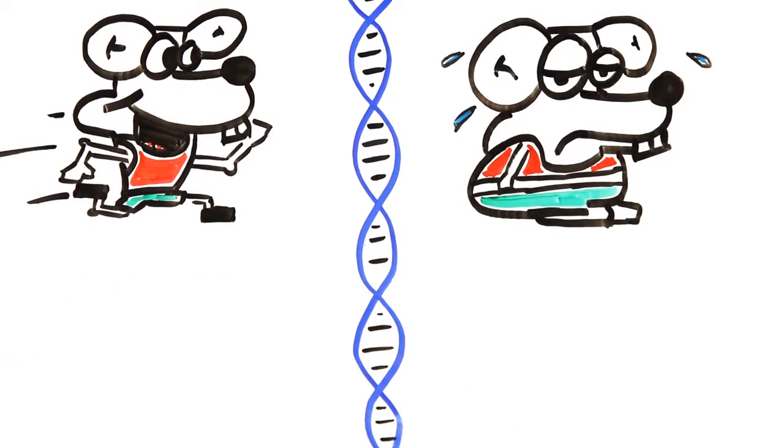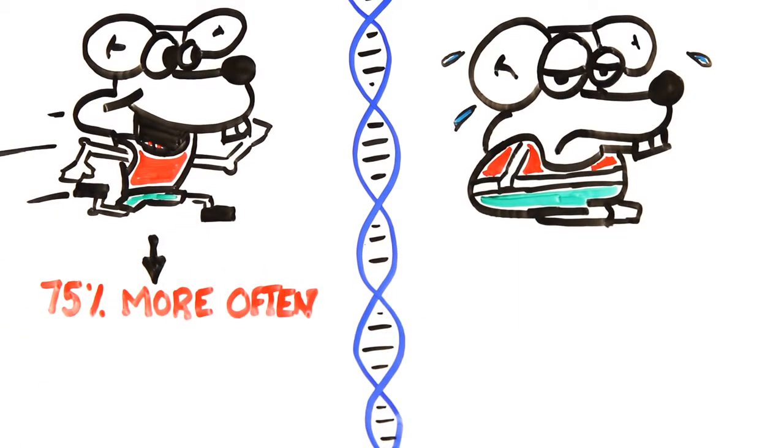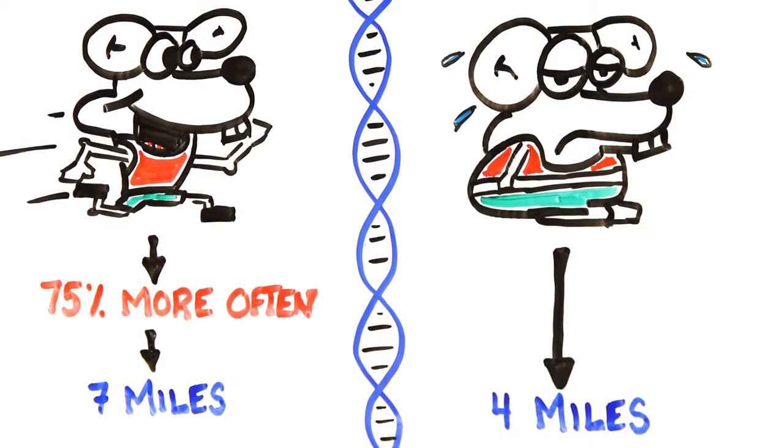the difference was clear in their offspring. After 10 generations, the running mice would run on their wheels 75% more often than the other group and by 16 generations they were running 7 miles a day as opposed to the average 4 miles. It seemed their motivation for physical activity was genetic.